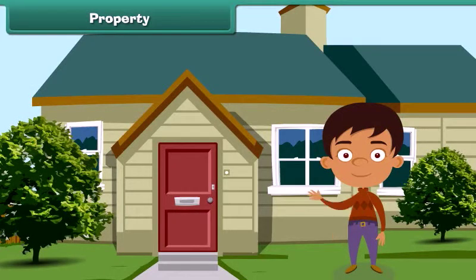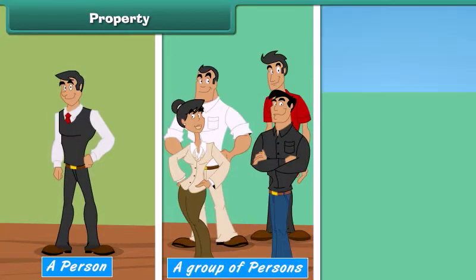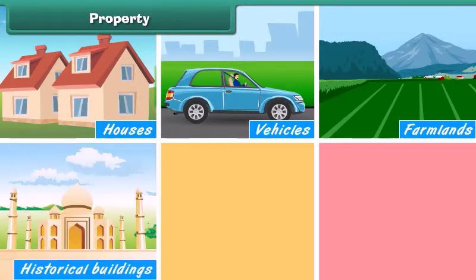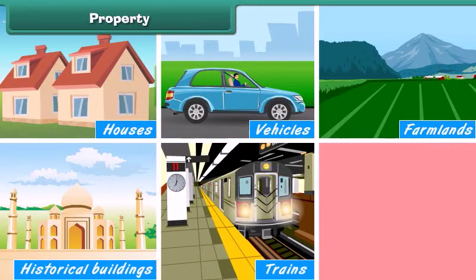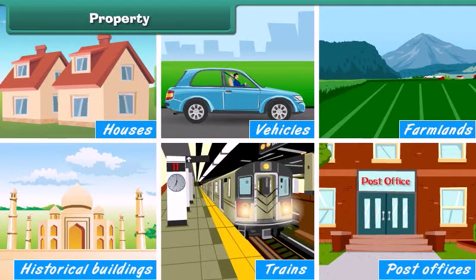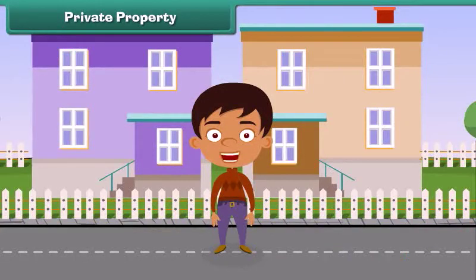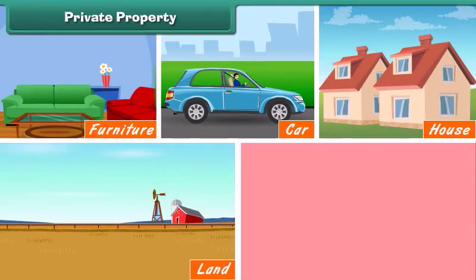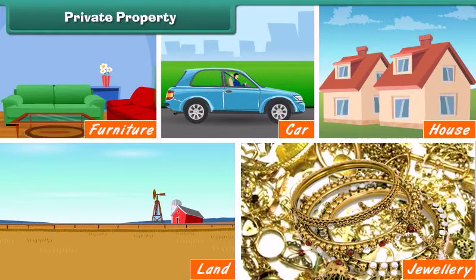Property is anything that is owned by a person, a group of persons, or the government. Private property is property owned by an individual or a group of individuals. For example, furniture, car, house, land, and jewelry are all private properties because they are owned by a single individual or a group of individuals.